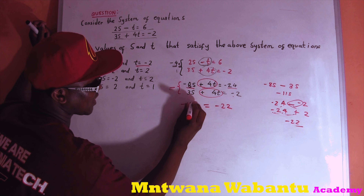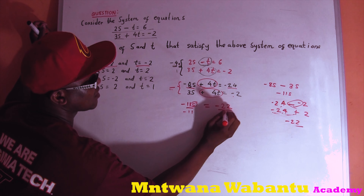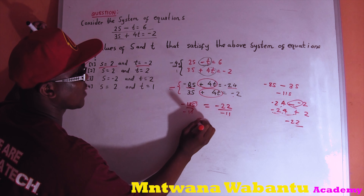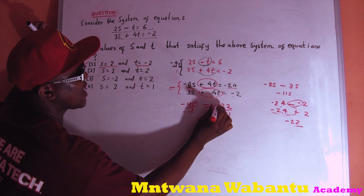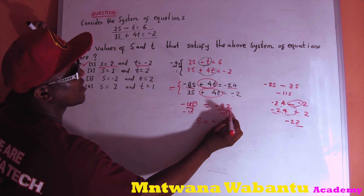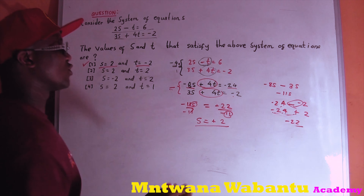So we have negative 11s equals negative 22. Divide both sides by negative 11. Negative divided by negative gives positive. 22 divided by 11 is 2, so s equals 2.